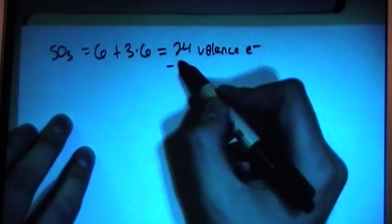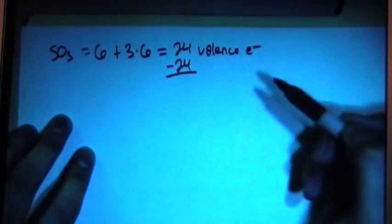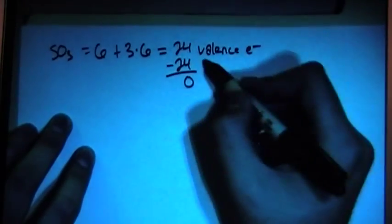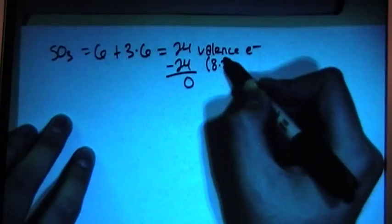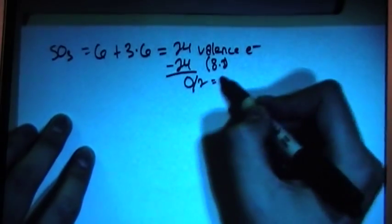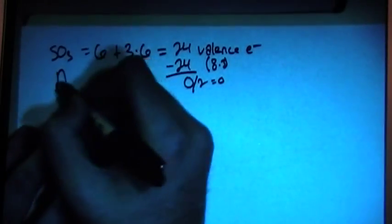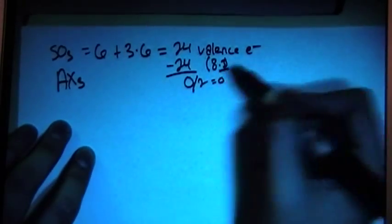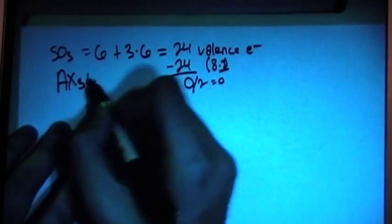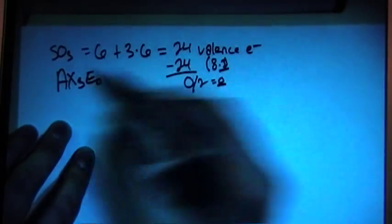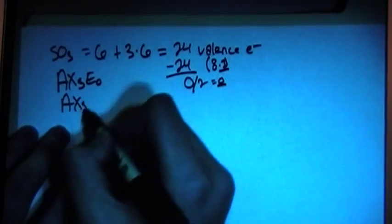So we can use my little trick: subtract the largest multiple of 8, which is going to be 24 in this case, gives us 0, and 24 is 8 times 3, and this divided by 2 is also 0. So this is going to be an AX3, because of this 3, AX3 E0, because of this 0, or just AX3 shape. We'll come back to that in a second.